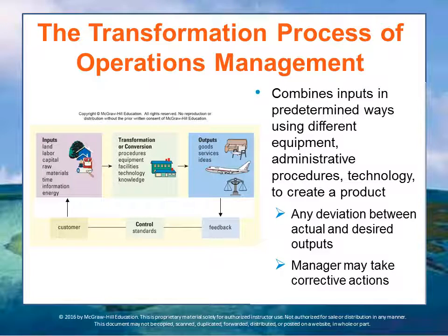The transformation process combines inputs that are used in predetermined ways. Land, labor, and capital are all brought in through the system using various kinds of equipment, administrative processes, organizational capabilities, knowledge management, software, and technology to create some sort of product — which can be a service — and moves it into the output process. This ensures that customers receive what they're looking for, and as events change those outputs, corrective action is taken through the feedback cycle. That's the continuous system operations.